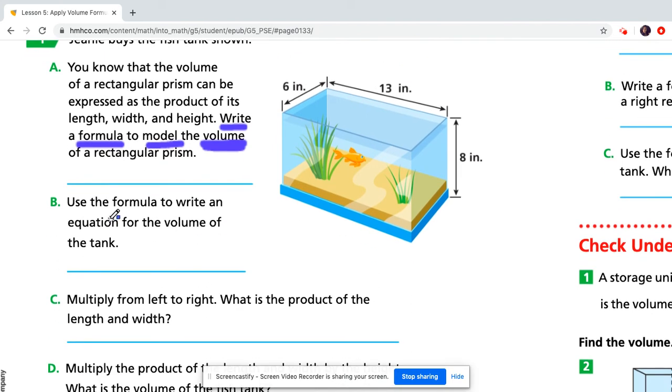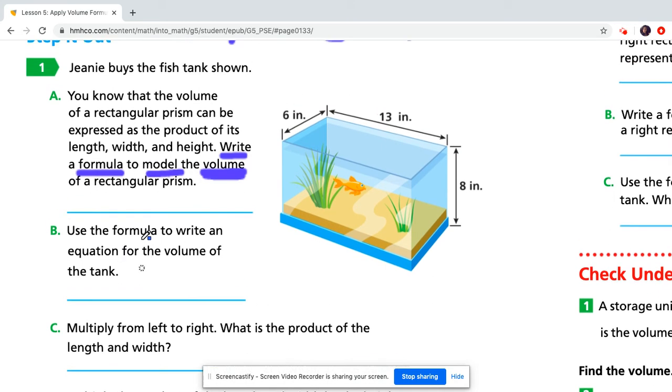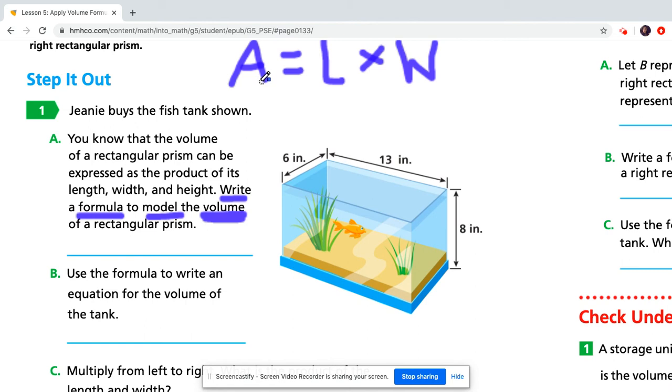Now it says it wants you to take that formula that you made for A and write an equation. So for example here, if I wanted to write an equation for area of this base, I would say area...